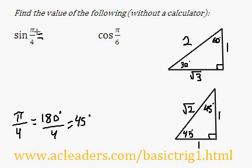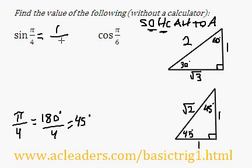Okay, so sine pi over 4. Sine using SOHCAHTOA is opposite over hypotenuse. So if we take a look at this triangle, this special triangle, which I would suggest that you memorize, they're pretty useful in trig. So 45 degrees, opposite is 1, hypotenuse is root 2, so that would be 1 over root 2.